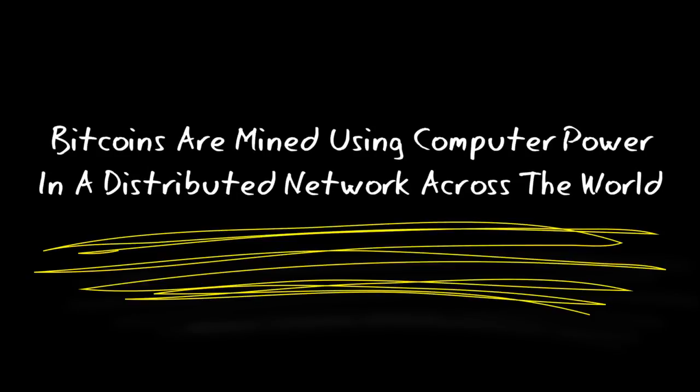The Bitcoin mining process is completely digital in its approach, as is Bitcoin. Bitcoins are mined using computer power in a distributed network across the world. But even with all that power, you can't create unlimited Bitcoins — only 21 million Bitcoins can ever be created. It's a rule that is enforced by the Bitcoin protocol, which is essentially the rule book for Bitcoin.